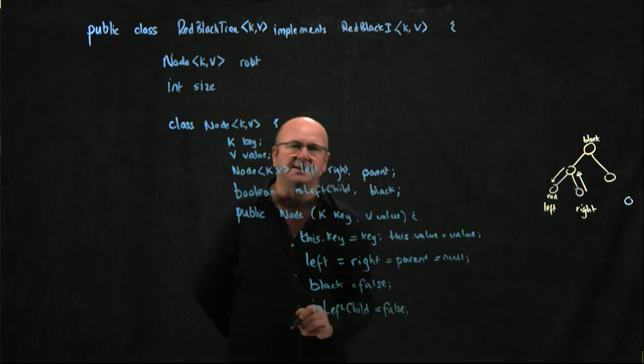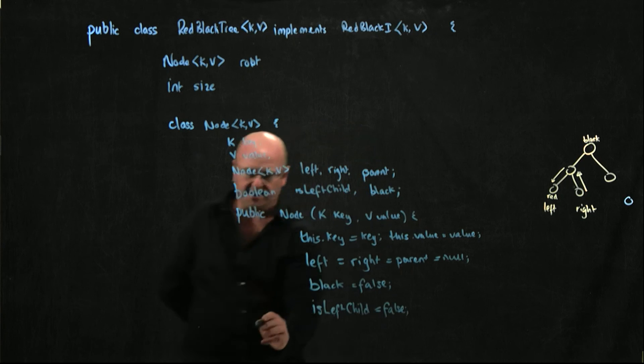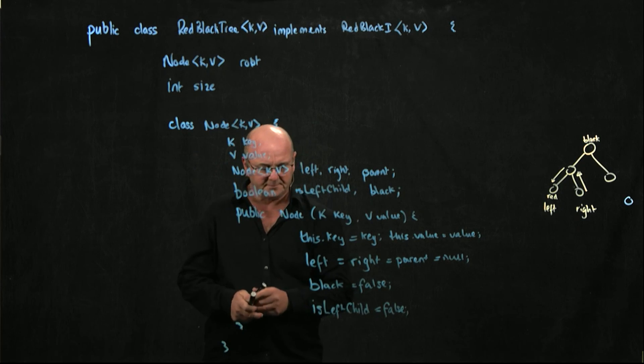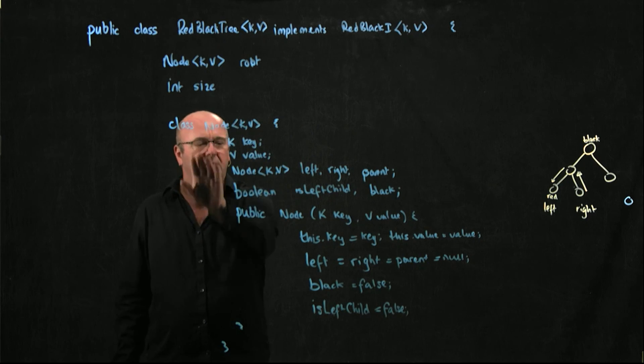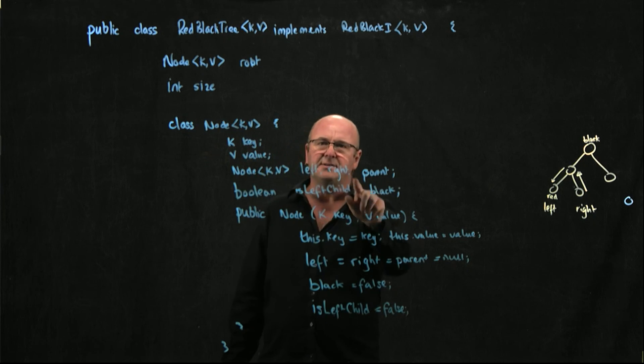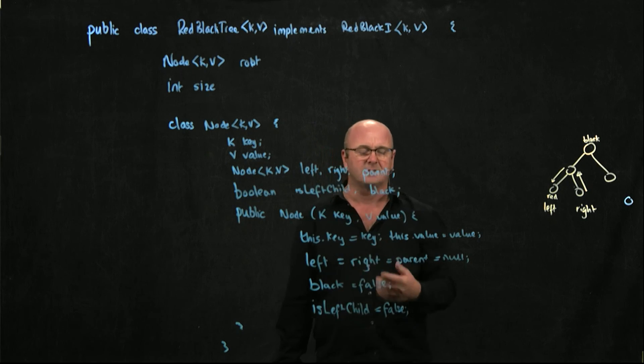It doesn't really matter. We could set it to true. It's not a left child. It's not a right child. It's a nothing. Poor little node. So there's our node class, our inner class, and the variables that we're going to use as we manipulate the tree as we add things, remove things, and so on.